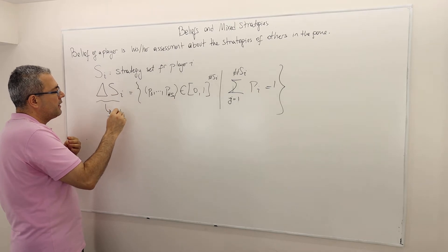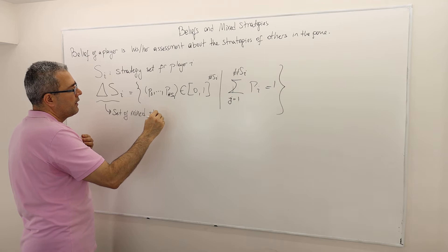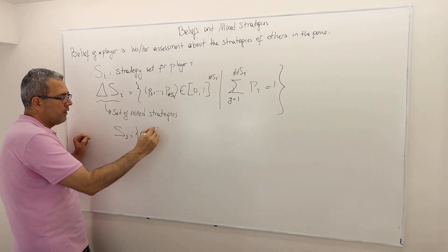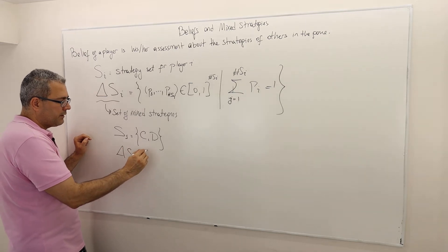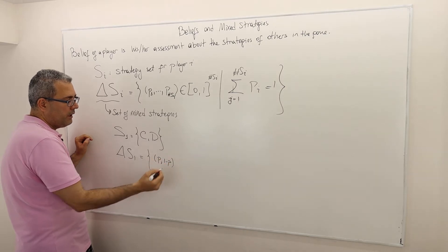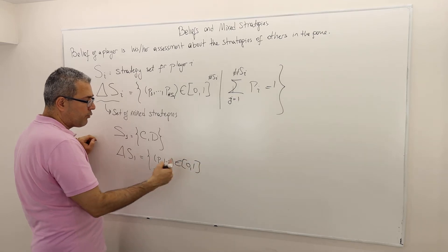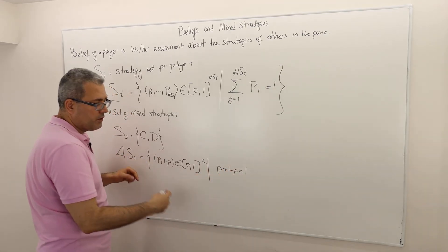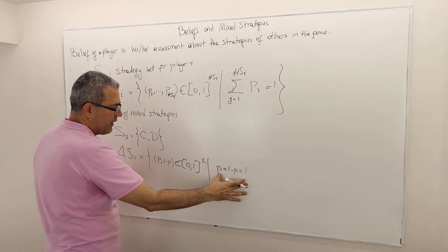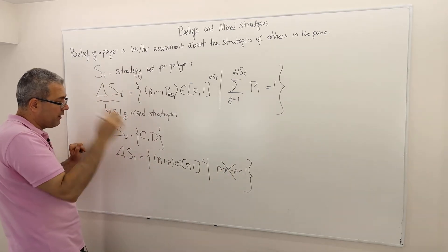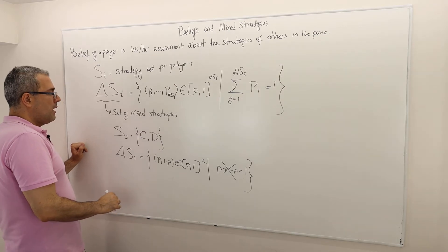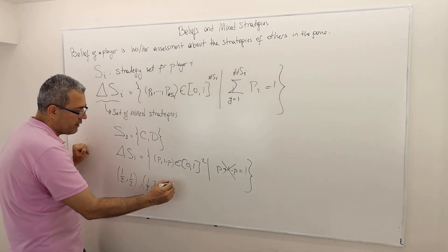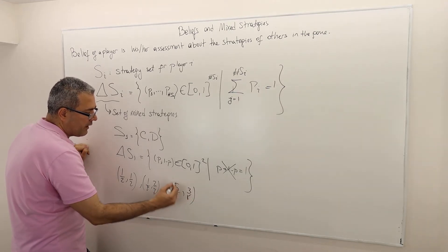We call this the set of mixed strategies. Remember our Prisoner's Dilemma example — the strategy set of player one is {confess, don't confess}. So therefore, delta S1 is nothing but {(P, 1-P)} in [0,1] to the power of the number of strategies in this set, which is two, such that P plus (1-P) equals one, which is automatic. So we don't really need to write this. It's basically just (P, 1-P) as an element of [0,1] squared. So for example, (1/2, 1/2) is one mixed strategy; (1/3, 2/3) is another; (5/8, 3/8) is another, and so on.